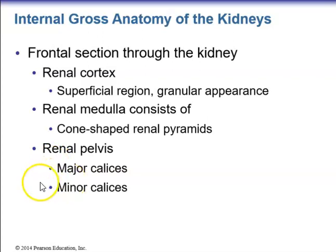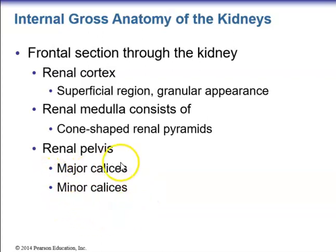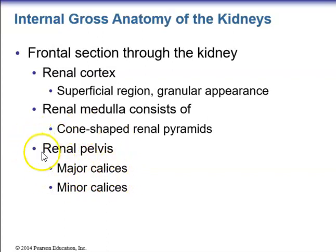Urine first drains into a minor calyx. A group of minor calyces then drains into a major calyx, and a group of major calyces drains into the renal pelvis. The renal pelvis exits the hilum of the kidney, becomes the ureter, and urine is transported toward the urinary bladder.